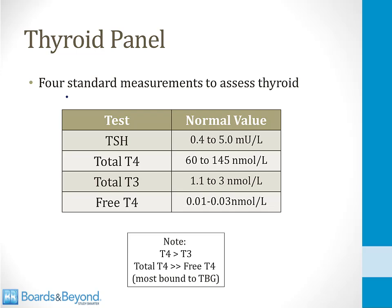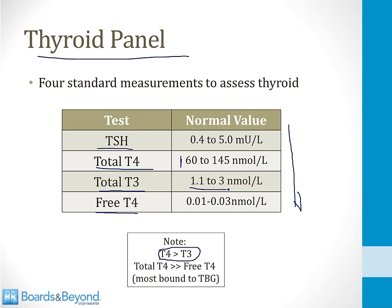There are four standard measurements used to assess thyroid function in the thyroid panel: TSH, total T4, total T3, and free T4. The T4 level is much higher than T3 — normal total T4 is 60–145 while normal total T3 is 1–3 — because the thyroid gland mostly produces T4 and relatively little T3. Total T4 is also much greater than free T4 because most T4 is bound to TBG, leaving a relatively small amount of free T4 in serum.